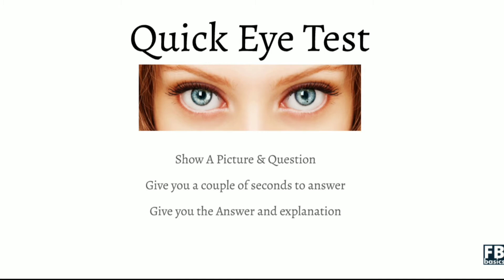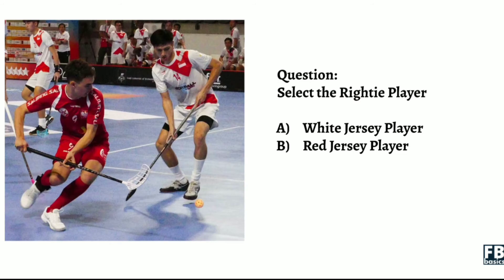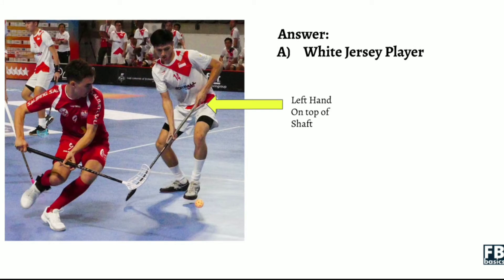The question is: from the picture, select the righty player. And the answer is the white jersey player. Why? Because if you focus on his left hand, his left hand is on top of the shaft. Therefore, he is the righty player.